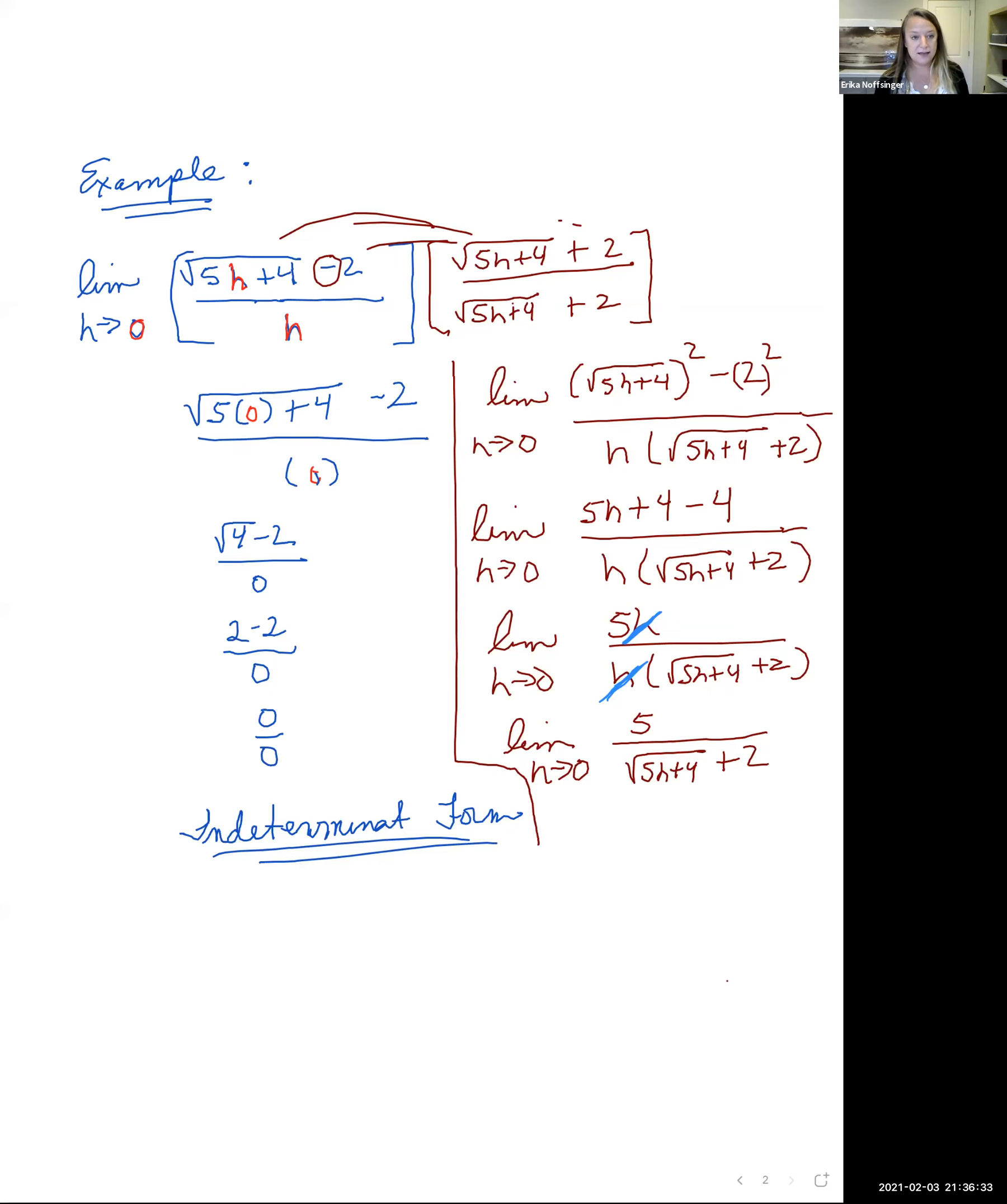So let's take the limit again, let's do our direct substitution. And so now wherever we see an h, we're going to plug in 0. And since we're taking the limit, we're going to drop the limit sign. So we have 5 all over the square root, 5 times h plus 4 outside plus 2.